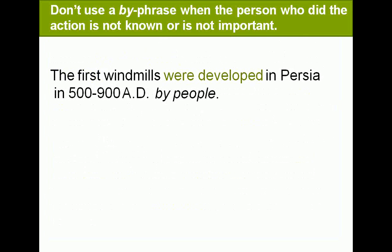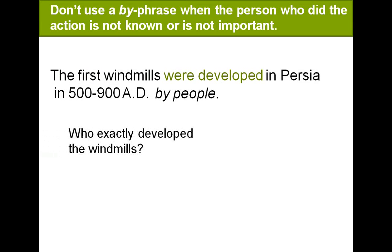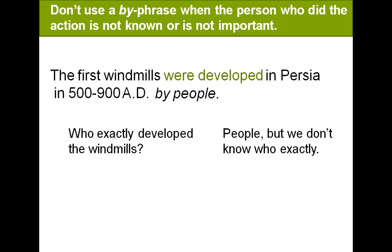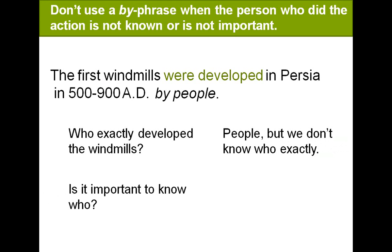The first windmills were developed in Persia in 500–900 A.D. We're not going to use the 'by' phrase when the person who did the action is not known or is not important. So who exactly developed the windmills? People — but we don't know who exactly. Is it important to know who? No, it's not important. So away goes 'by people.' We don't need it.